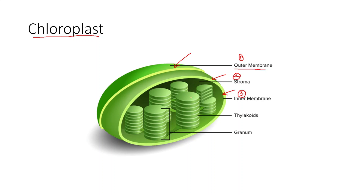Between the outer membrane and the inner membrane you have the stroma. Within the inner membrane you have some stacks arranged like a pile of coins. Each pile is called a thylakoid. Each circular stack is called a thylakoid, and all together one complete stack is called a grana. Individual units are called thylakoids, and these units pile up to form one grana. In this picture you can see six grana.